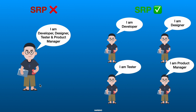Let's take a real-world example. Imagine a person who says: I'm a developer, I'm a designer, I'm a tester, and I'm a product manager. If only one person in a company is responsible for all these tasks, they can't carry all those responsibilities effectively. It would be a mess — the company will suffer and tasks won't be completed because this person can't handle developer, designer, tester, and product manager tasks simultaneously. This person is breaking the SRP rules.